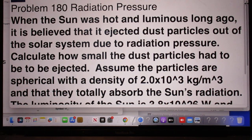When the sun was hot and luminous long ago, it is believed that they ejected dust particles out of the solar system due to radiation pressure. Calculate how small the dust particles had to be to be ejected.